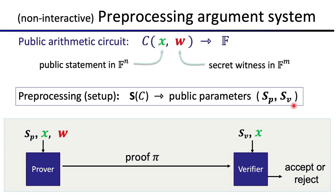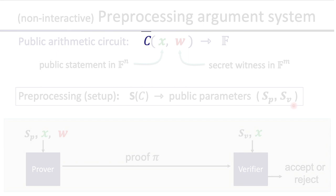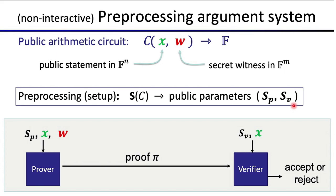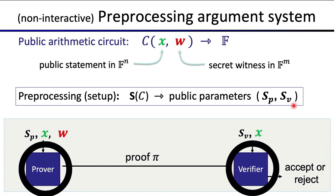It's important to note that some of the arithmetic circuit c, which forms part of the proof, is actually calculated within the pre-processing argument where both the prover and verifier receive the public parameter s, represented by sp for the prover public parameter and sv for the verifier public parameter.